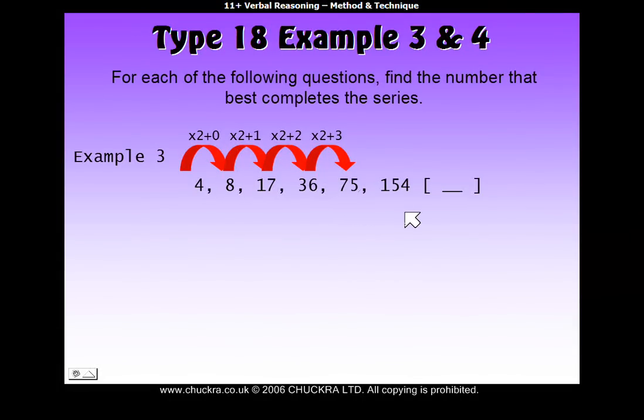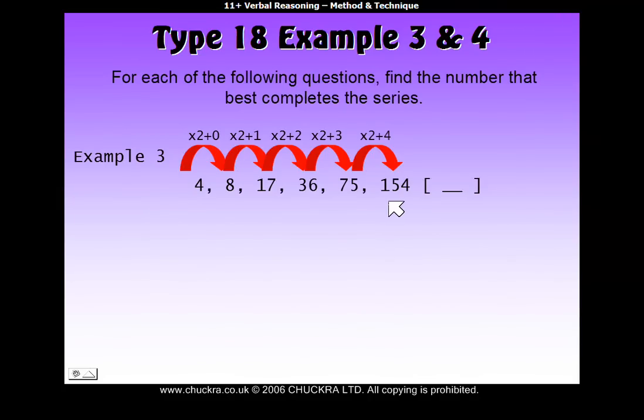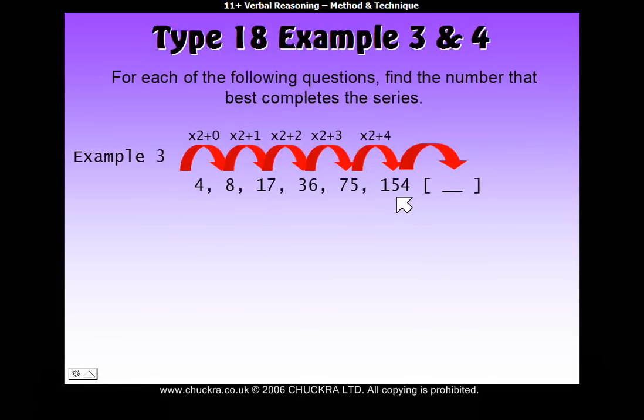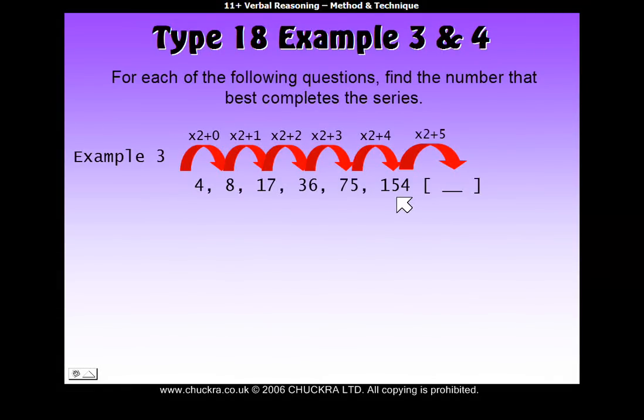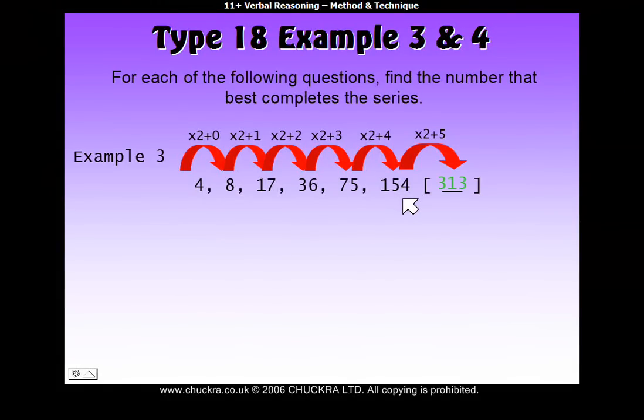So 75 to 154. If we double 75, we get 150, and we're adding 4. So to get our answer, we need to double and add 5. So 154 times 2, or 154 doubled, is 308, plus 5 is 313.